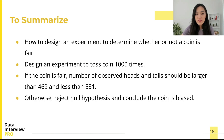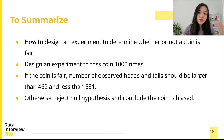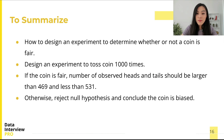Let's summarize what we have learned. We covered one of the three versions of the coin problem: how to design an experiment to determine whether or not a coin is fair. We design an experiment to toss a coin 1,000 times. If the coin is fair, we should observe between 469 and 531 heads — and the same applies to tails. Otherwise we reject the null hypothesis and conclude the coin is biased.